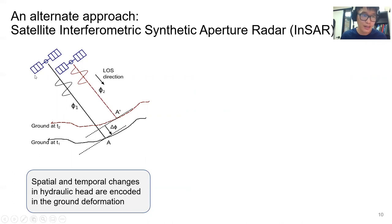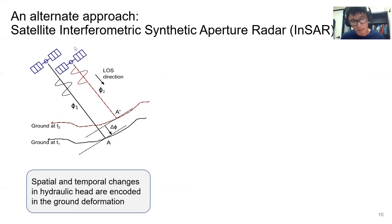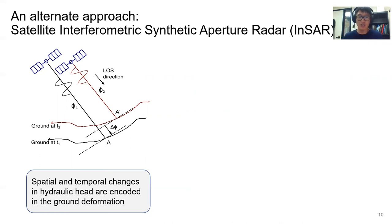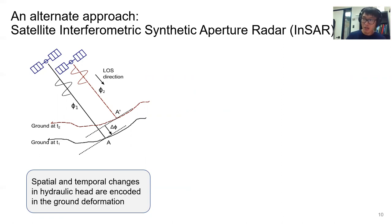We are going to use satellite interferometric synthetic aperture radar, called InSAR, to fill in this data gap. A satellite sends an electromagnetic pulse which can measure the phase. The satellite returns to the same location and measures another phase. By converting this phase difference into surface deformation, we can measure surface deformation from the satellite — that is the InSAR technique. Importantly, spatial and temporal changes in hydraulic head are encoded in ground deformation, which can be measured by InSAR.